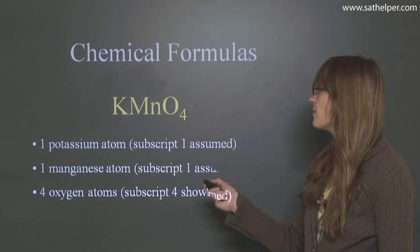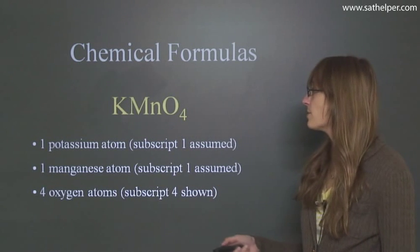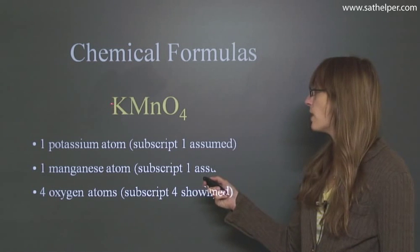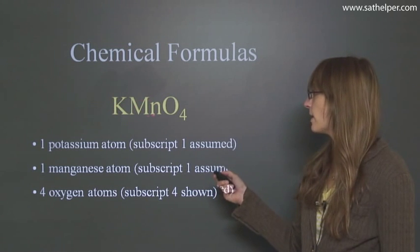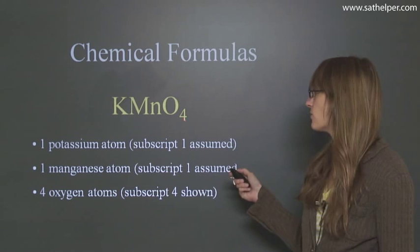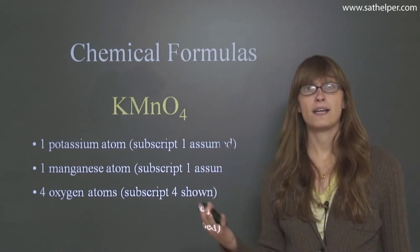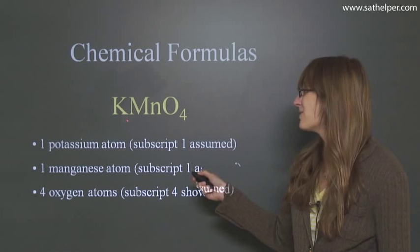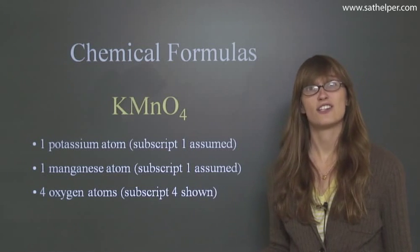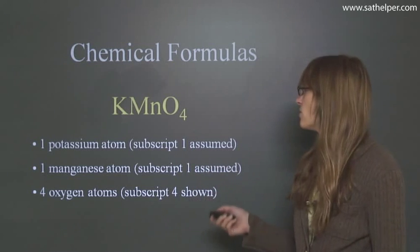So here's an example of a chemical formula. And in this formula, we see that potassium has one atom, manganese has one atom, and oxygen has four atoms. So if you're having one atom, usually you would write the one here, but it's not really necessary, so you just leave it blank.